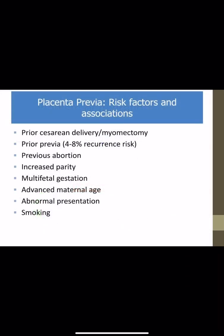Predisposing factors for placenta previa: Number one, previous cesarean section — the incidence increases with the number of cesarean sections; also myomectomy scar (removal of uterine fibroid). Number two, previous placenta previa — there is a 4 to 8% chance of recurrence. Number three, previous abortion, especially induced abortion. Number four, multiparity. Number five, multiple pregnancy. Number six, advanced maternal age. Number seven, abnormal presentation like transverse lie or breech presentation. And lastly, smoking also increases the incidence of placenta previa.